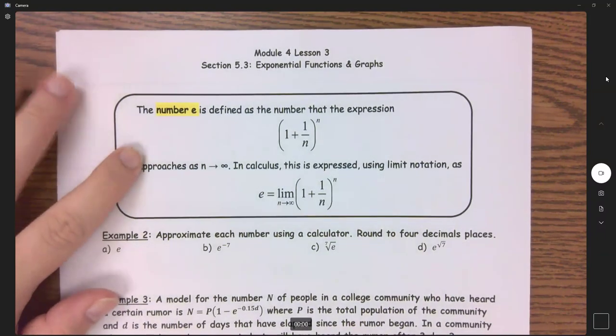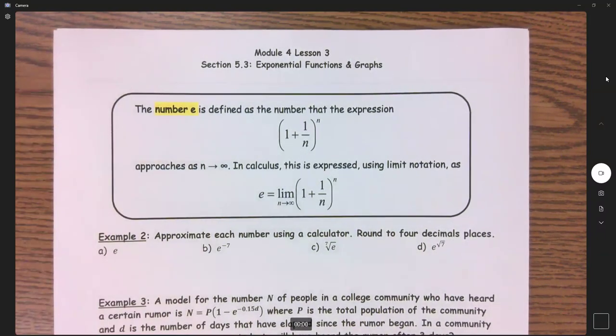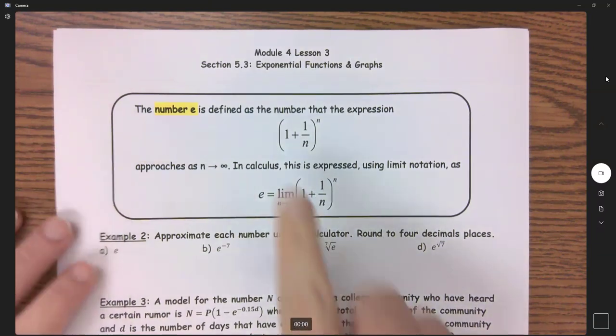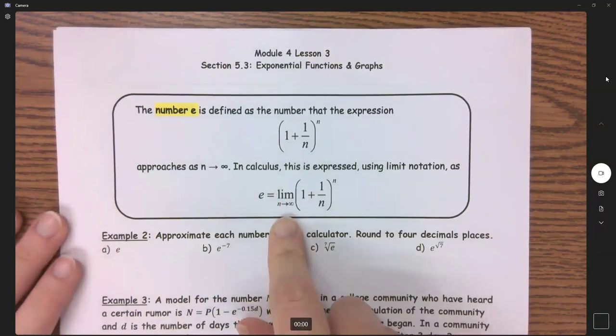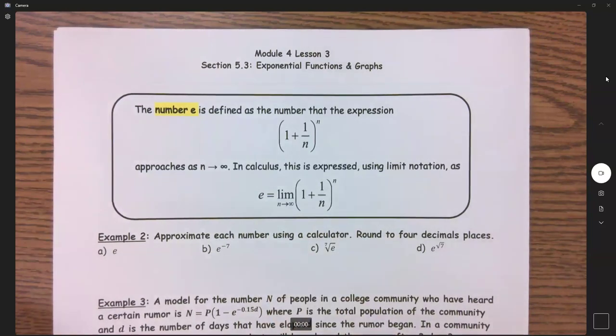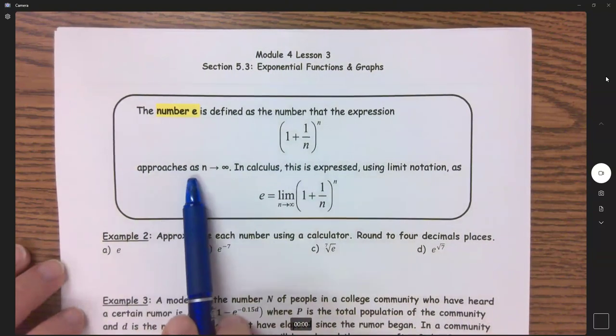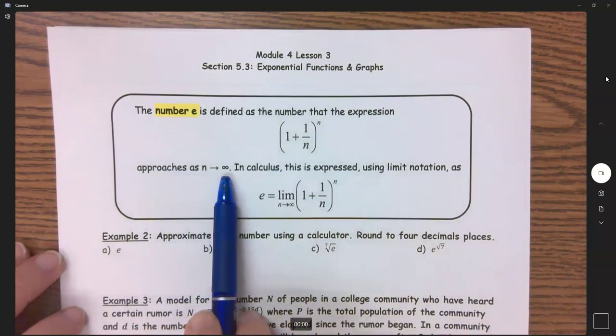I included this in your notes simply because you're going to have a question in MyMathLab where it wants the technical definition. The number e is defined as the number that the expression right here approaches as n goes to infinity.